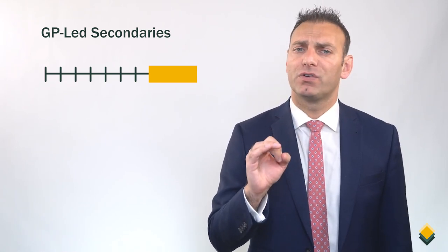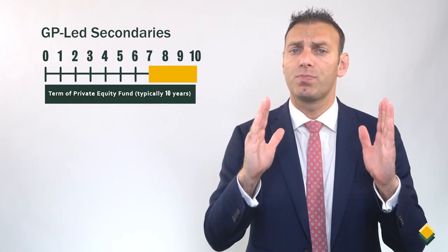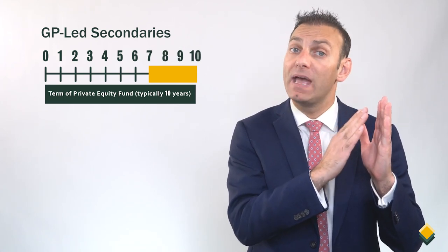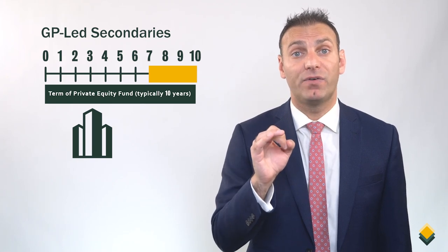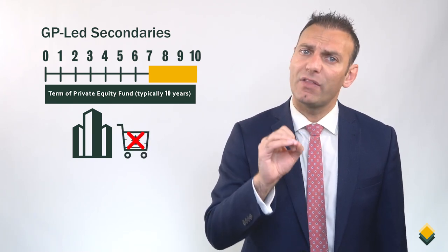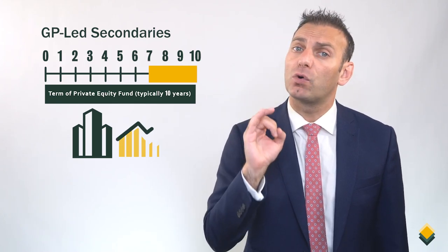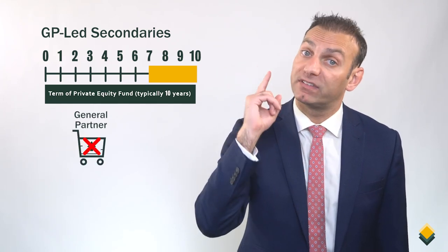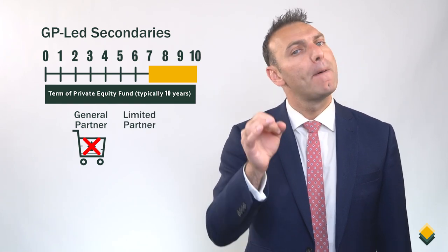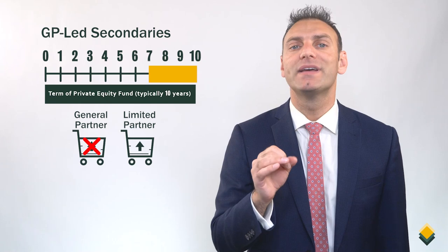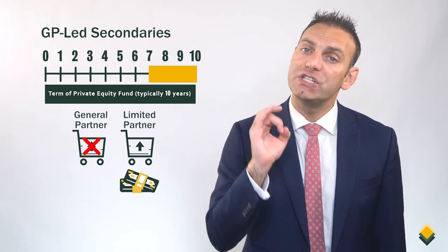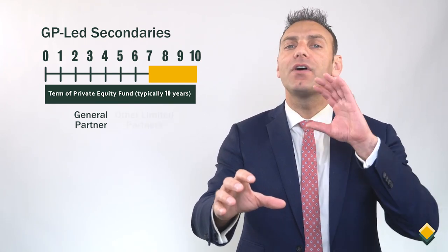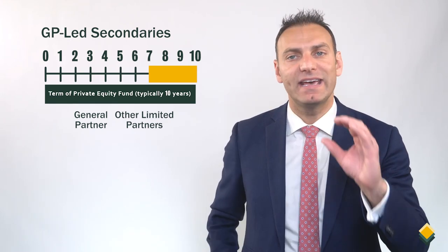If you remember from our previous videos, a typical private equity fund's life is 10 years in length. Towards the end of the fund — in year 7, 8, 9, or even 10 — there may be portfolio companies in the private equity fund that are not ready to be sold. In other words, the portfolio company or companies may have further growth prospects. Because of this, the GP may not want to sell the company, but some of their investors — the limited partners — may want to sell to get liquidity. So the GP can create a structure where certain LPs can exit, while other LPs and the GP can maintain their interest in the investment.